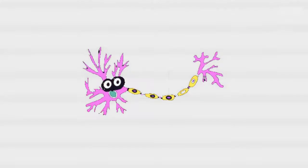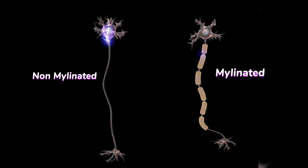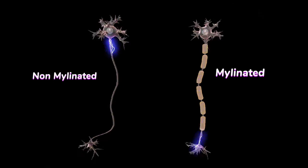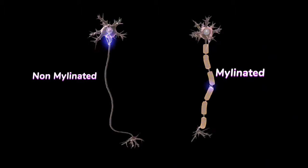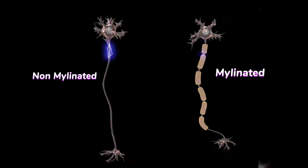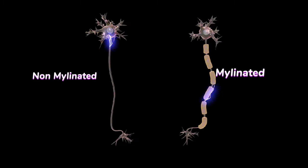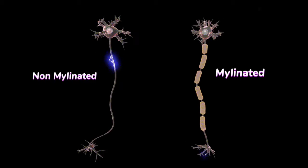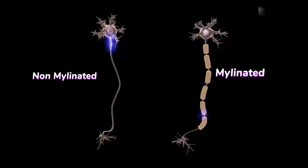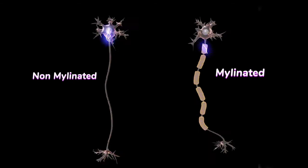Hello dear students, there are two types of nerves: myelinated nerve and non-myelinated nerve. If myelin sheath is present, it is called myelinated nerve, and if myelin sheath is absent, it is called non-myelinated nerve.